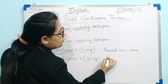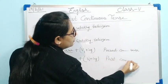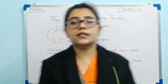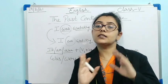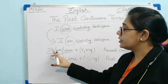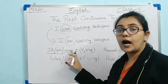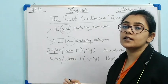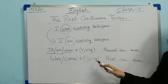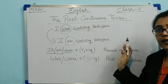This is the past continuous tense formula. The action is still going on in the past. Instead of 'is' or 'am' we use 'was', and instead of 'are' we use 'were'. So the formula is: was or were + verb first form + -ing. This is the formula for past continuous tense.